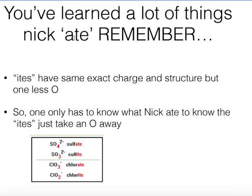You only need to memorize the 'ates,' because 'ites' have the same exact charge and structure but with one less oxygen. For example, sulfate is SO4^2-; sulfite is SO3^2-. Chlorate is ClO3^-; chlorite is ClO2^-. So once you know your 'ates,' you automatically know the 'ites' — just take one oxygen away.